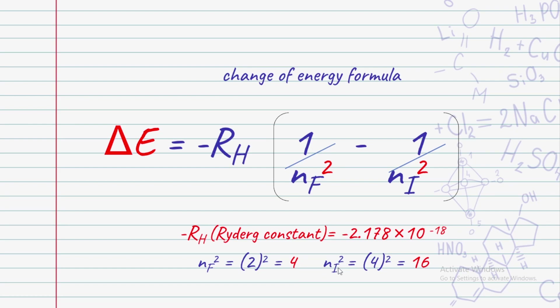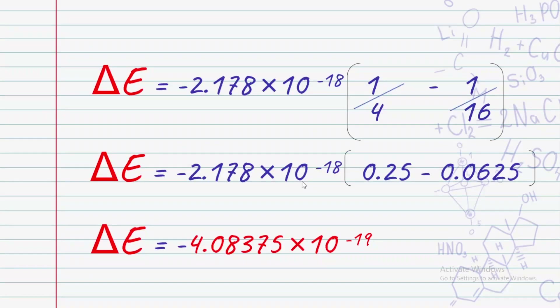For the initial, the energy level is 4, and for the final energy level it is 2. So n final squared gives 4, and n initial squared gives 16. We plug in the Rydberg constant, 1 over n final squared, and 1 over n initial squared.